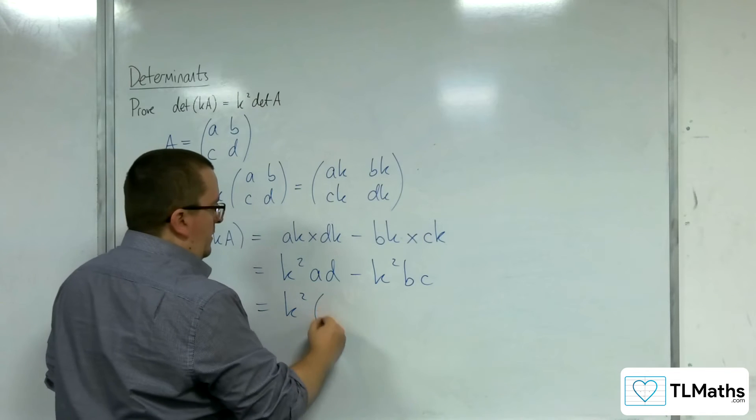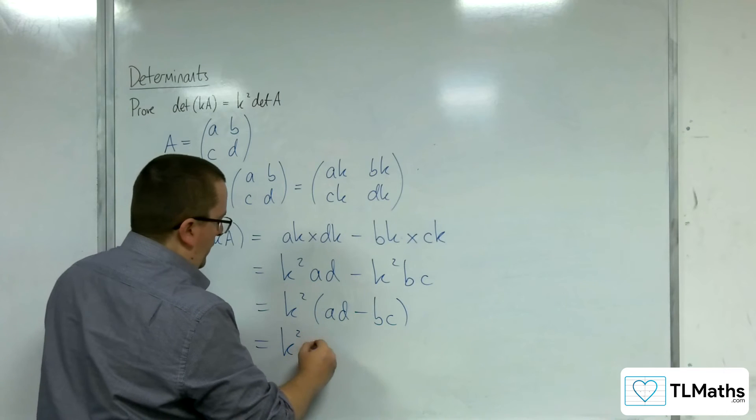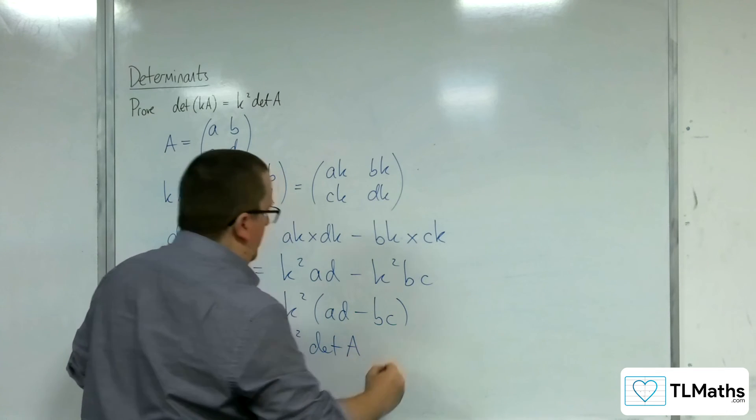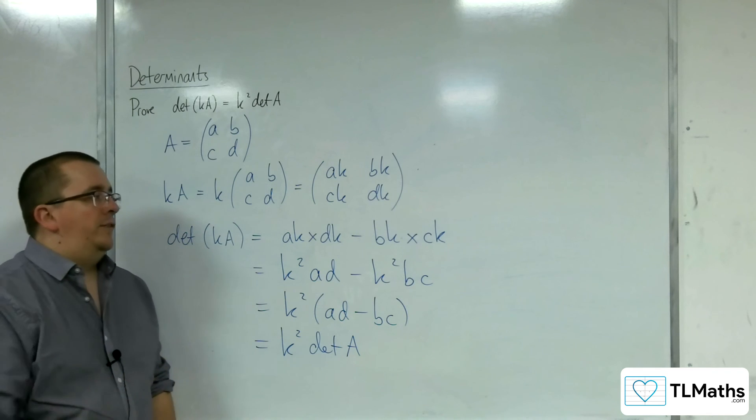So k squared can be factored out of AD take away BC. And that is, of course, the determinant of the matrix A. Okay, and so that statement is proved.